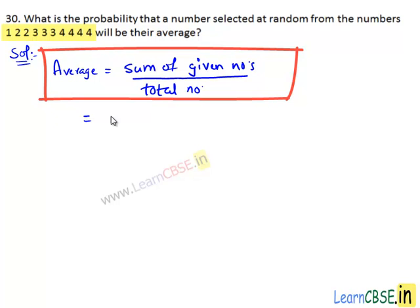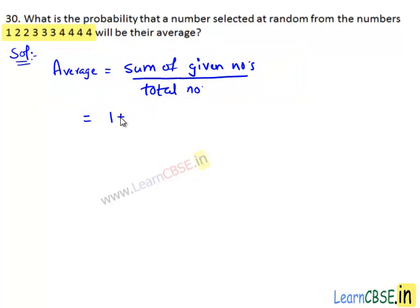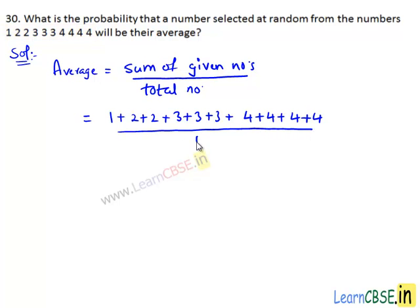Then we have average equals to sum of the given numbers: 1 plus 2 plus 2 plus 3 plus 3 plus 3 plus 4 plus 4 plus 4 plus 4, divided by total number of given numbers, which is 10.